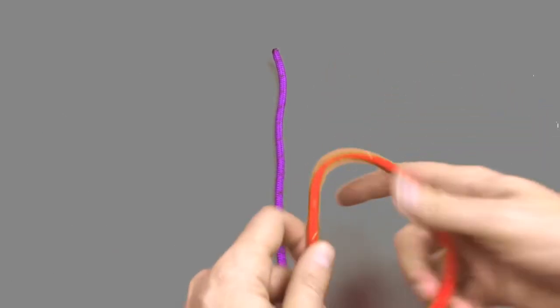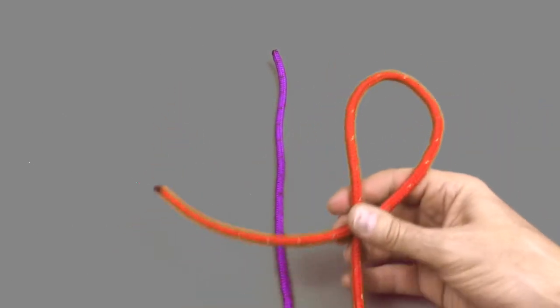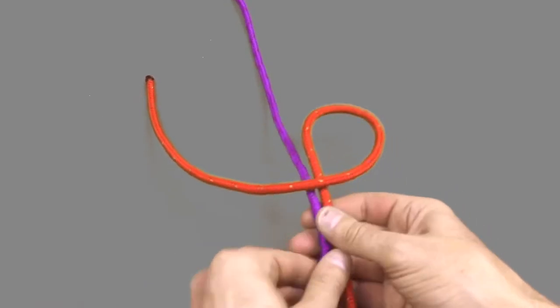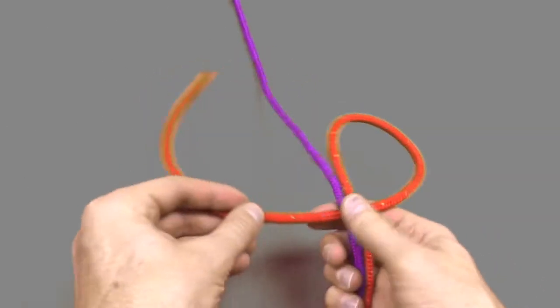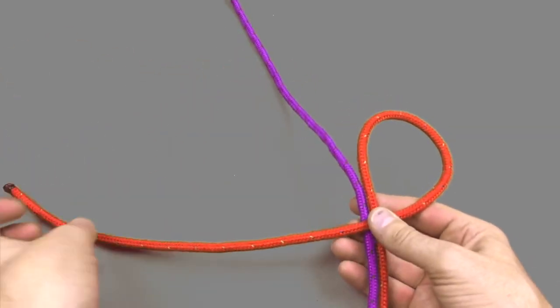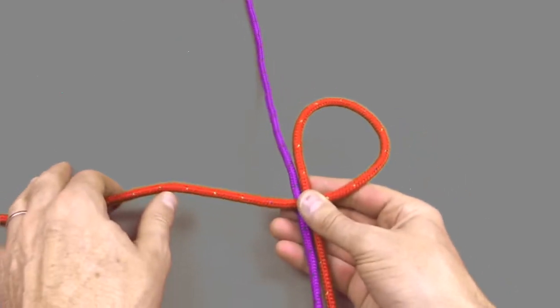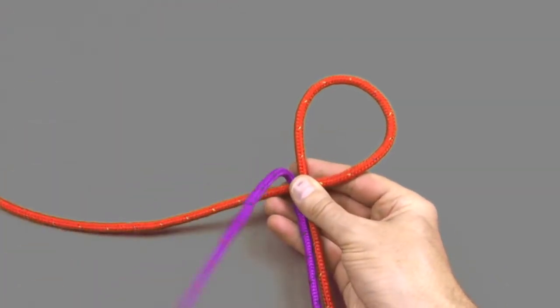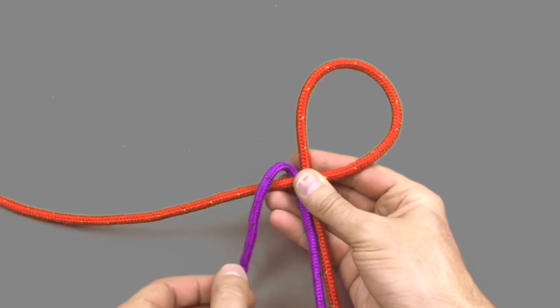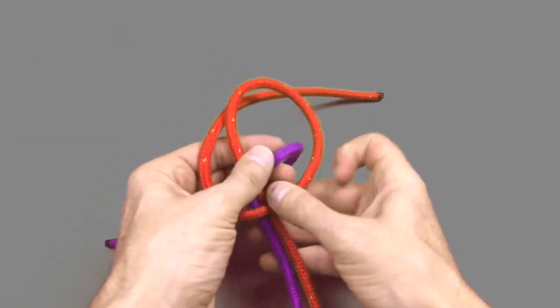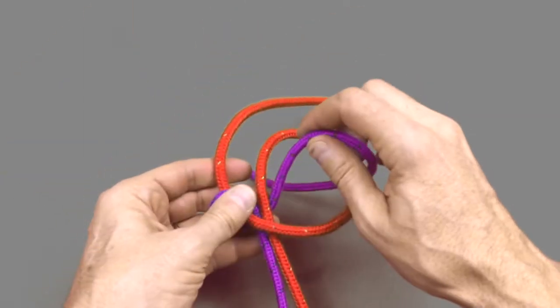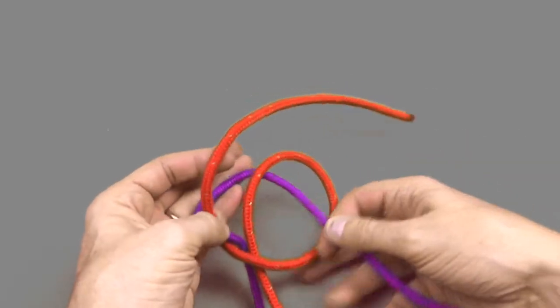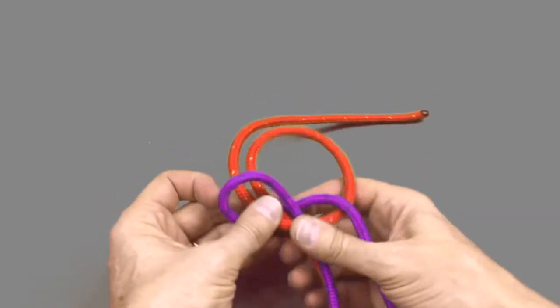Step 1 is to take the red cord and create a loop once again in the clockwise direction over on top of itself. Step 2 is to take the purple line over the top of the red line and then up and through the purple loop making sure that the tail is underneath the main cord.